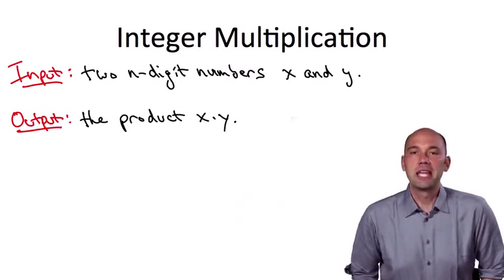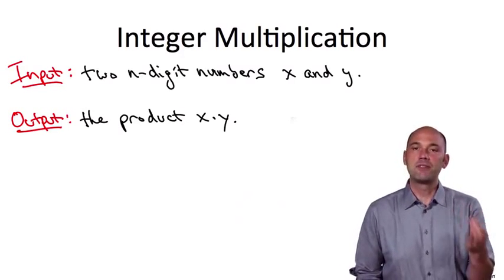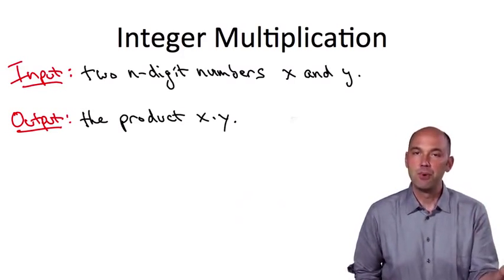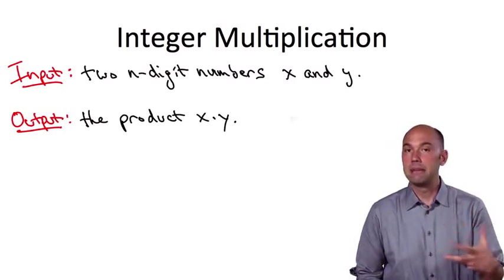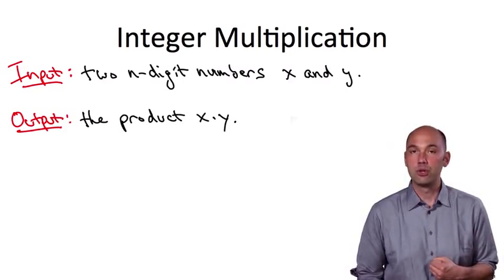Returning to the integer multiplication problem, having now specified the problem precisely - the input, the desired output - we'll move on to discussing an algorithm that solves it, namely the same algorithm you learned in third grade.